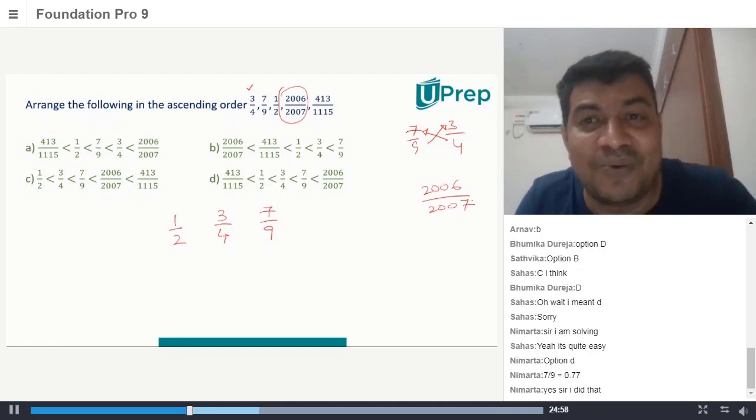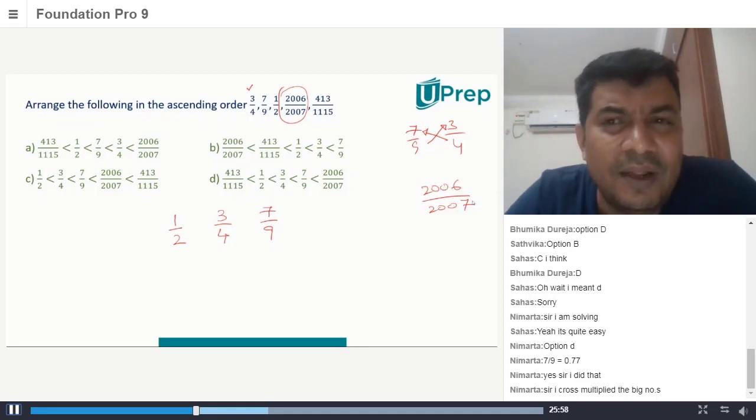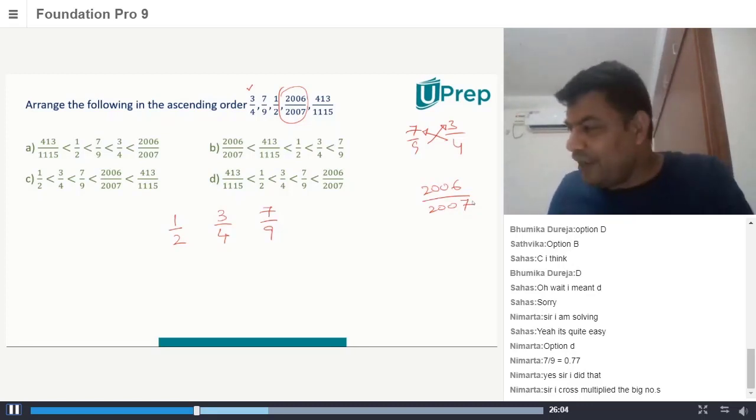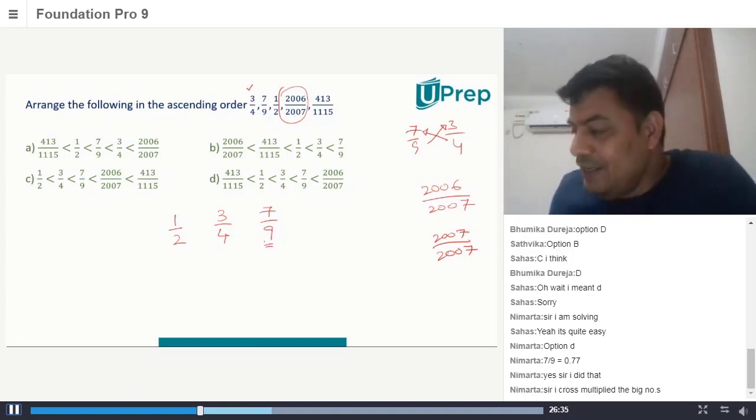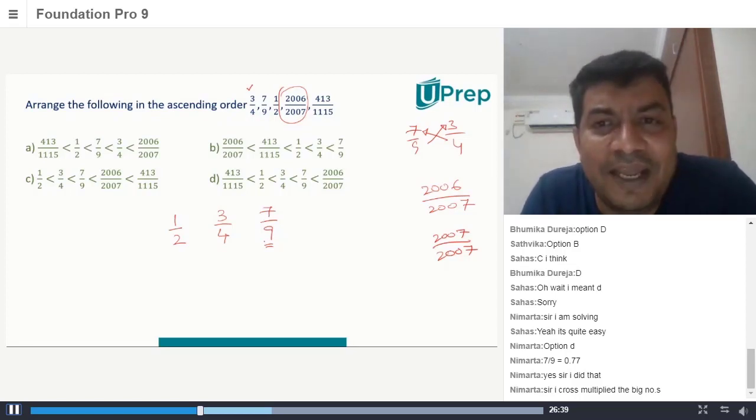2006/2007, quickly anyone. Can I say 2006/2007? What is 2007/2007? It's 0.9999. It's almost equal to 1. Now tell me, will that be more than 7/9 or will it be less than 7/9?